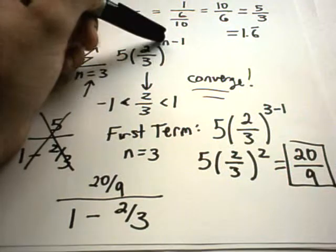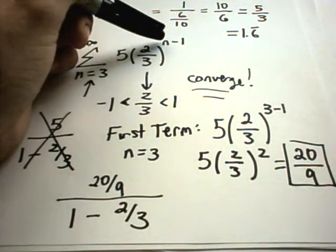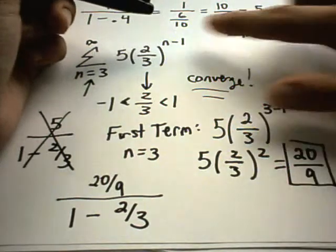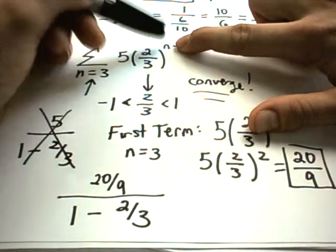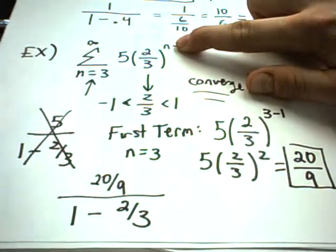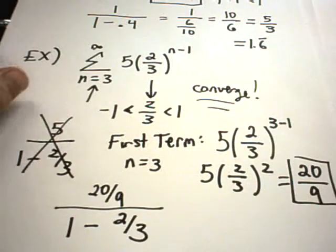Maybe I've got just plain n to the n power. Again, then my first term is going to be a little bit different. If I don't have the minus 1, I'll get 5 times 2 thirds cubed. And that's going to give me a very different first term than 20 over 9. So just be careful about that.